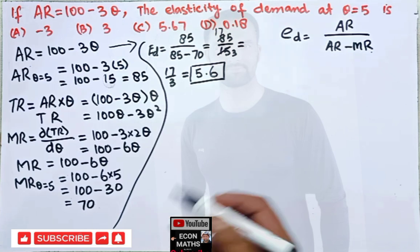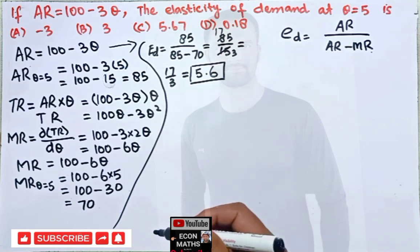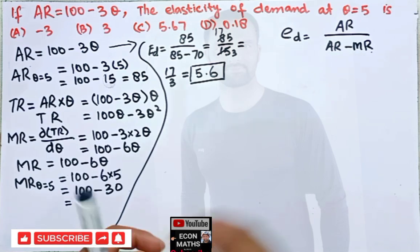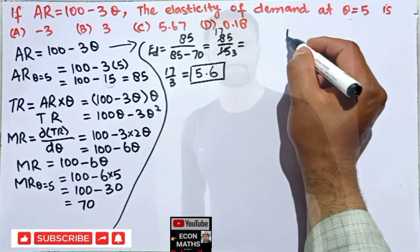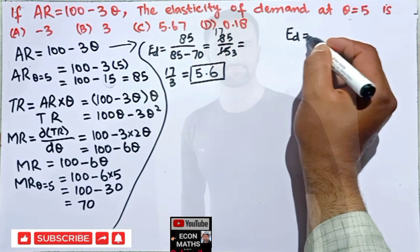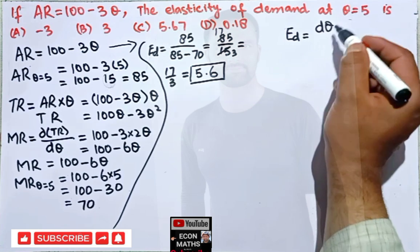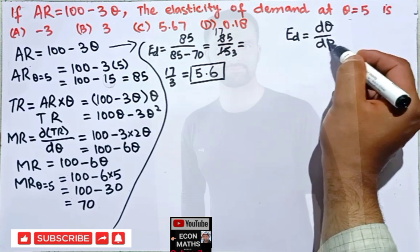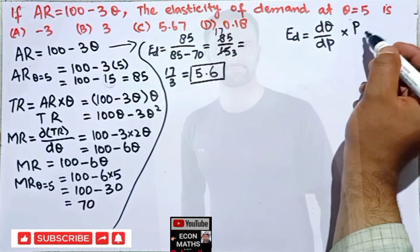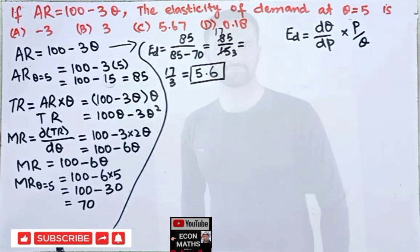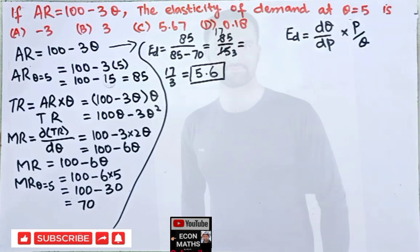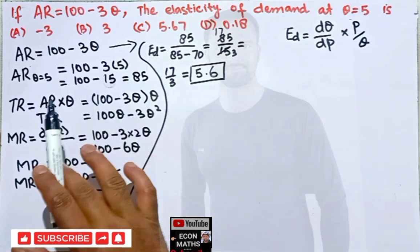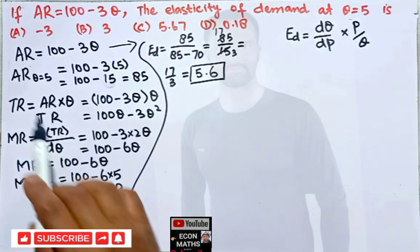Now coming to the usual formula for finding the price elasticity of demand — we know it well: elasticity of demand equals dQ/dP times P divided by Q. In this case we need to find the derivative dQ/dP.